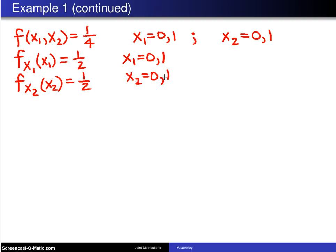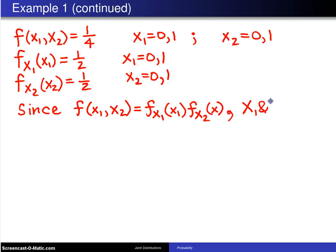Because of that, since the joint distribution f(X1, X2) is equal to the product of the marginal distribution for X1 and the marginal distribution for X2—which is to say 1/4 equals 1/2 times 1/2—the conclusion there is X1 and X2 are pairwise independent.